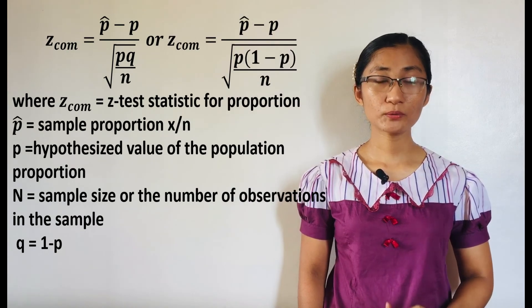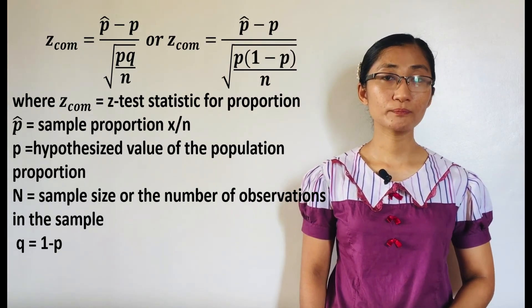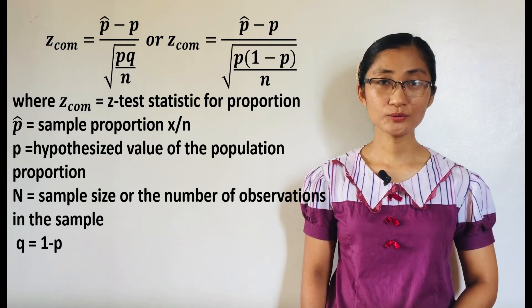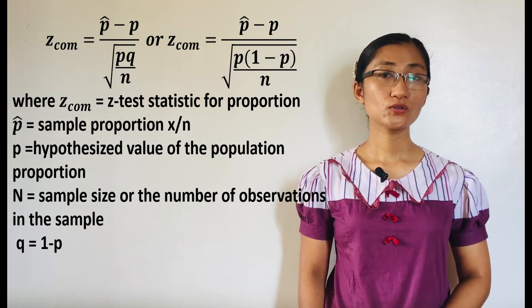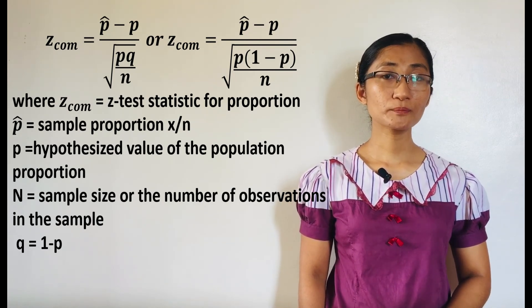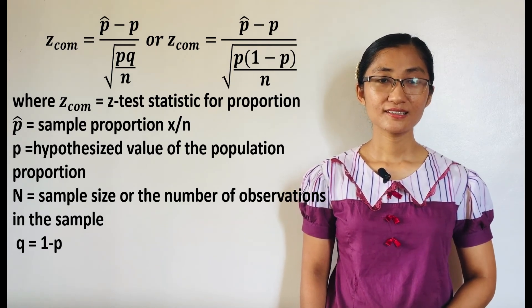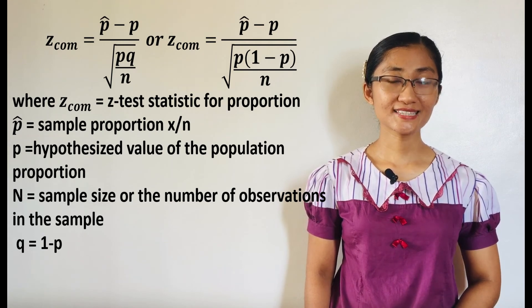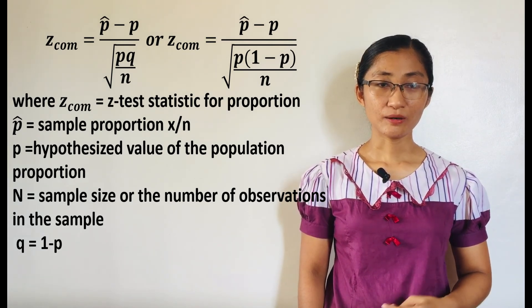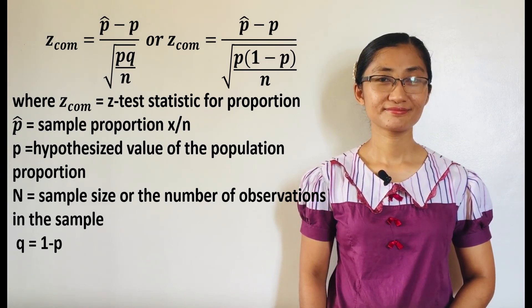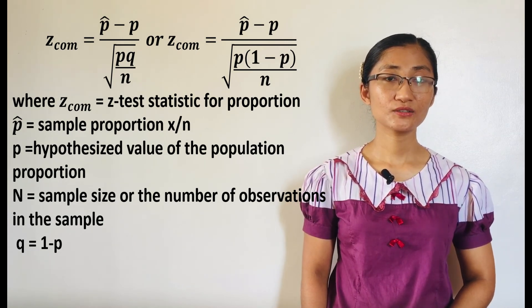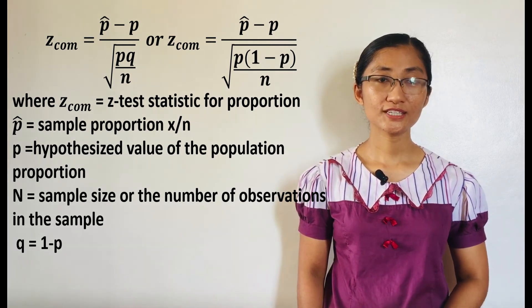In this situation, the test statistic we need to use is the Z-test statistic for proportions, or computed Z value. It is computed as: Z equals p-hat minus p over the square root of p times (1 minus p) over n. Where the computed Z value is the Z-test statistic for proportion, p-hat is the sample proportion x over n, p is the hypothesized value of the population proportion, n is the sample size or number of observations in the sample, and q is obtained by 1 minus p.